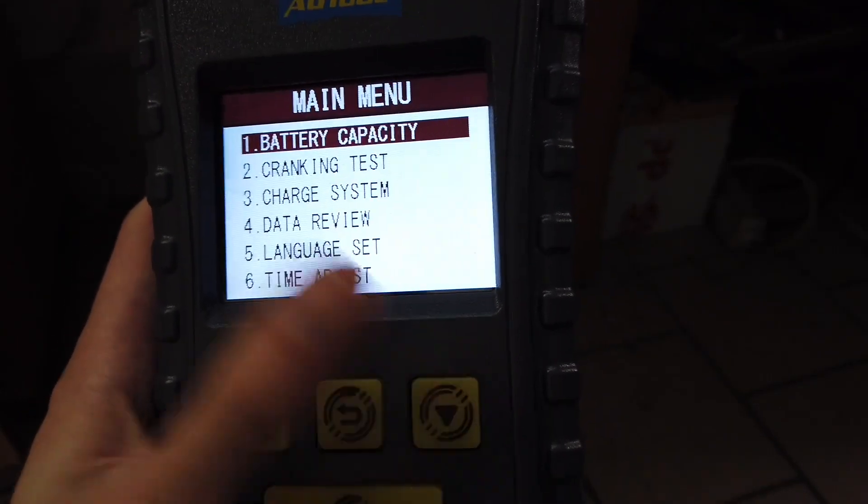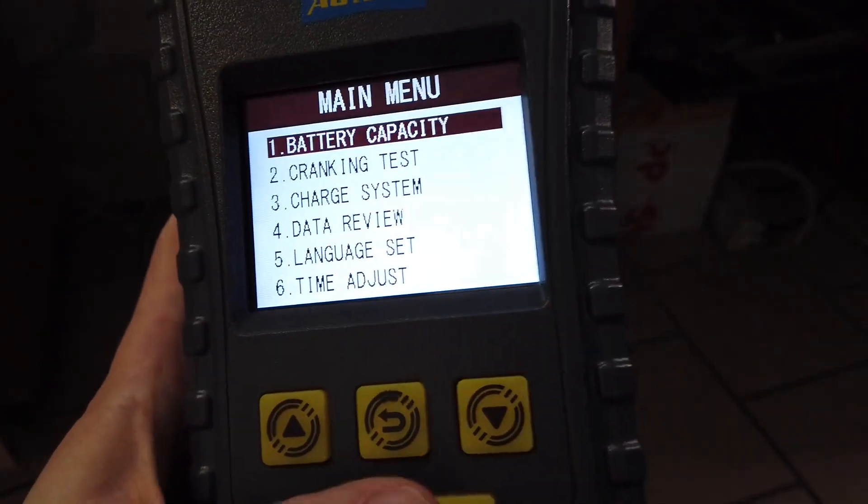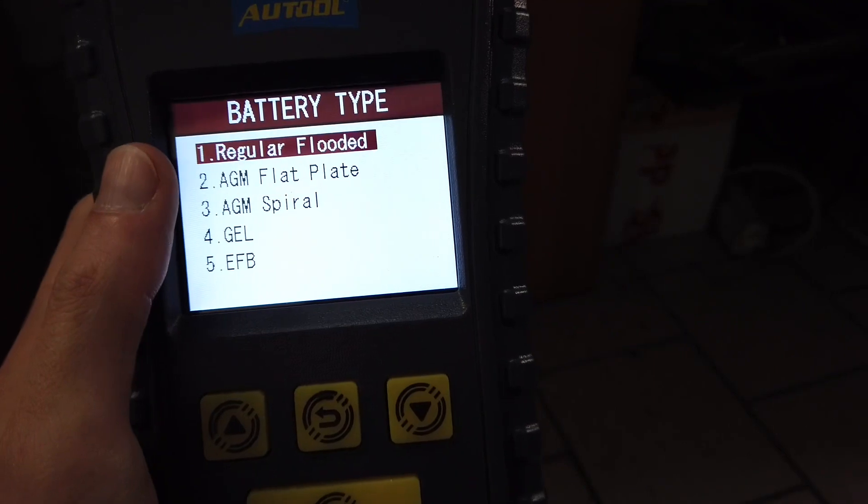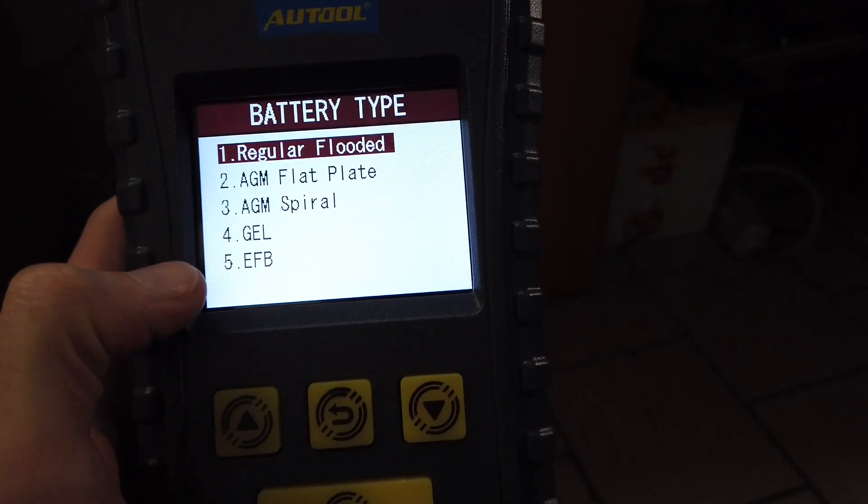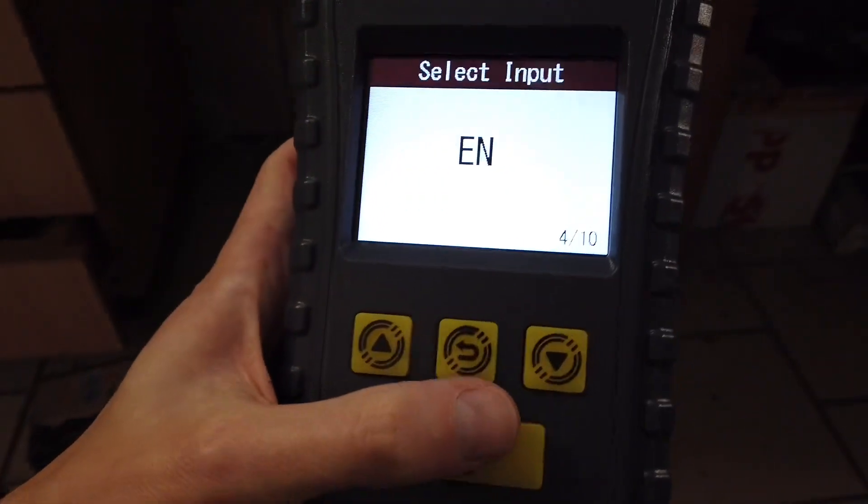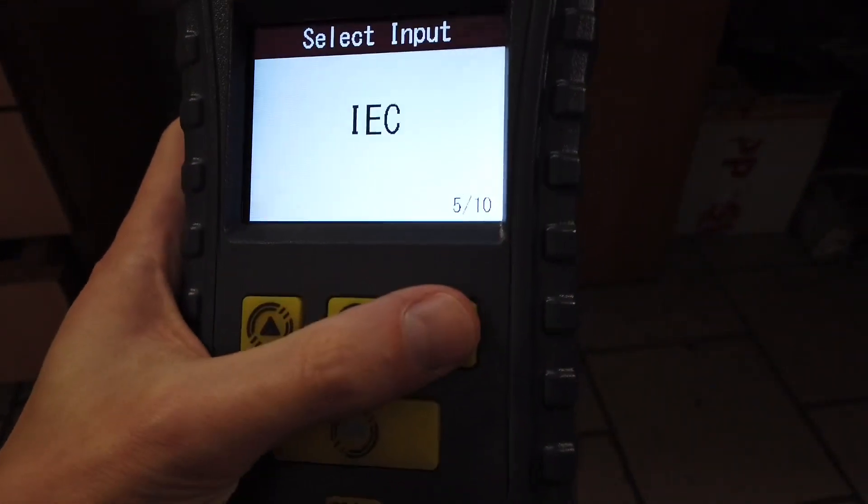Let's perform the battery capacity test. Select if it's a regular battery or something else. I believe this is a standard battery, so let's pick the first one. Now select what type of rating it has.